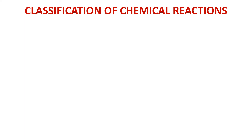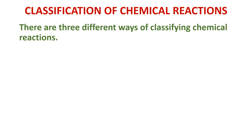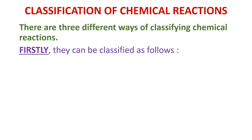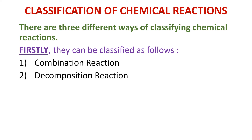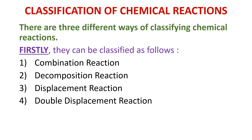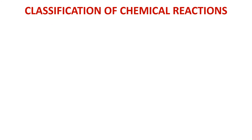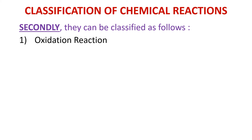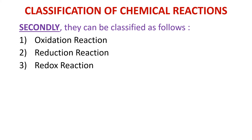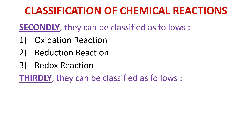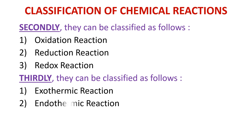Similarly, there are three ways to classify chemical reactions. The first way includes: combination reaction, decomposition reaction, displacement reaction, and double displacement reaction. The second way of classifying is: oxidation, reduction, and redox reaction. The third and last way is: exothermic reaction and endothermic reaction. We will be learning all of these in detail in the later slides.